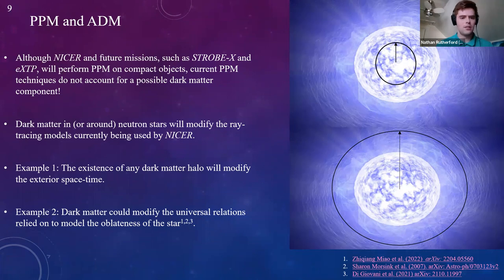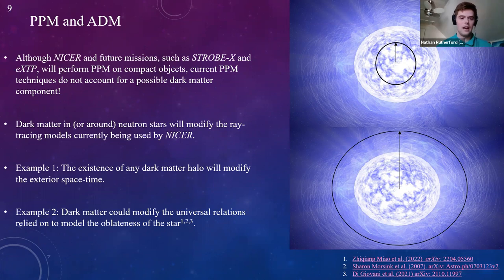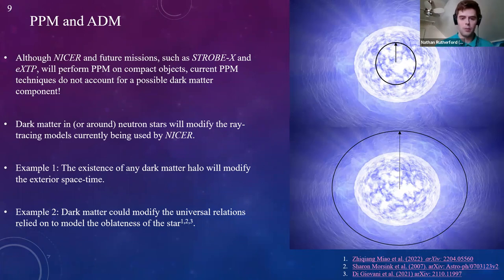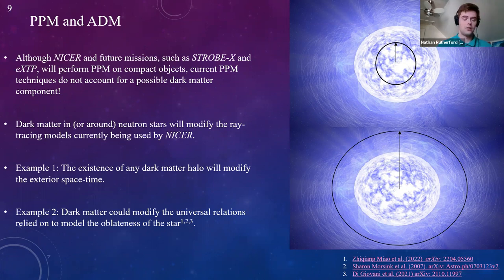A second example is that dark matter could modify the universal relations used to model the oblateness of the neutron star, as proposed by several papers including one from Sharon Morsink. This factor can also affect the exterior spacetime of the neutron star. So now that I've introduced ADM, described the model, discussed how neutron stars and ADM relate, and how we're going to measure it, let's talk about the plan for our study.